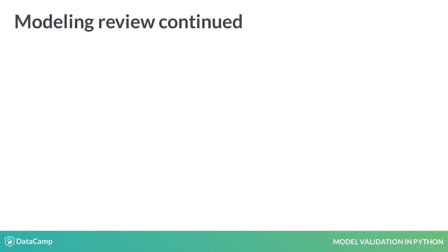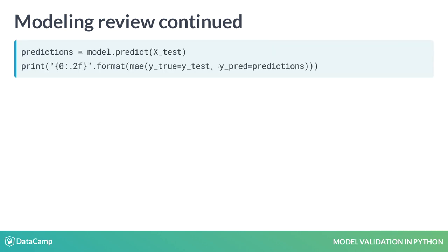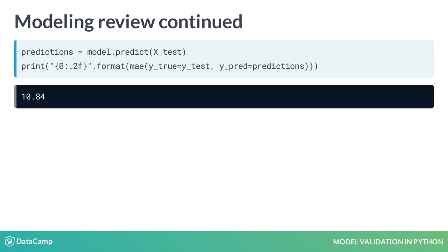To assess model accuracy, we generate predictions for data using the .predict method. And lastly, we look at the accuracy metrics. Here we are comparing the model's predictions, the variable predictions, and the actual responses. Future lessons and exercises will be devoted to accuracy metrics, as they are a vital component to model validation. For this current example, though, we are looking at the mean absolute error.